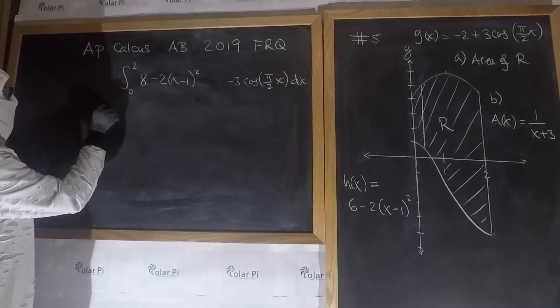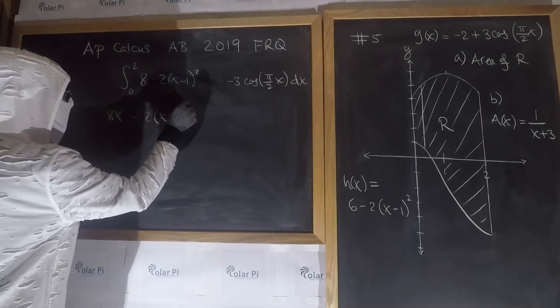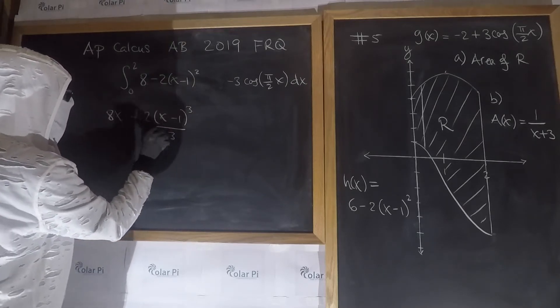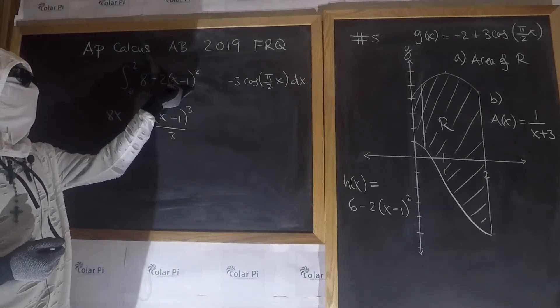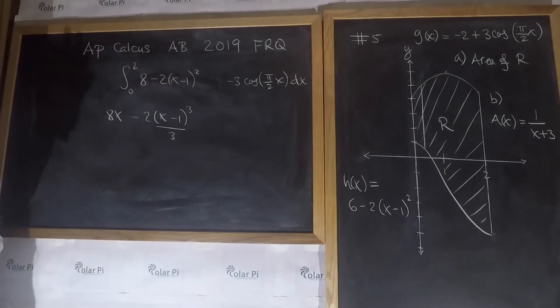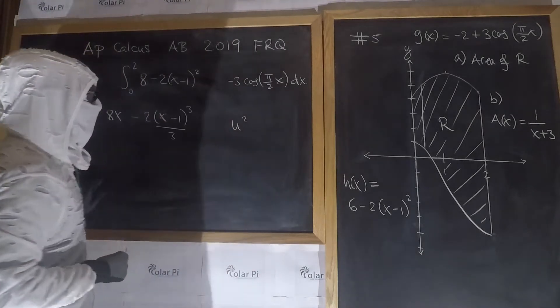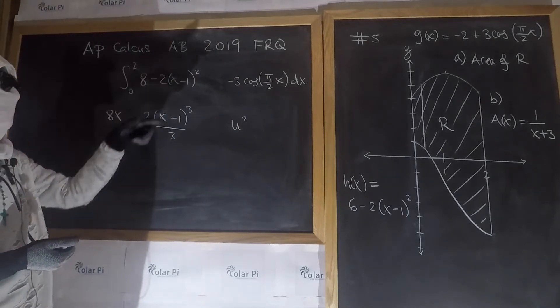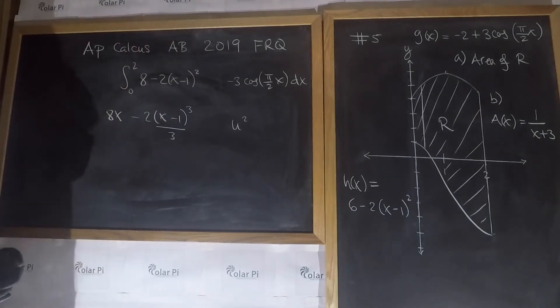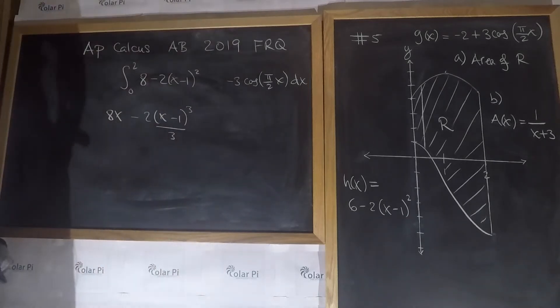This is going to be 8x, and then minus 2 times x minus 1 cubed over 3. It seems casual that I have a composition of functions, and I just did the power rule as if I'm doing u squared antiderivative. I did that because if I let u equal x minus 1, du is just dx. But don't be this casual and think that you could just do this all the time.